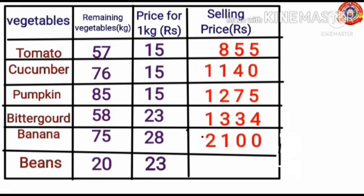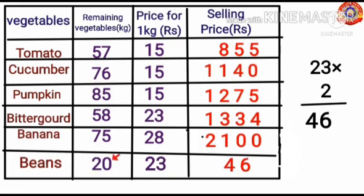Next, find the selling price of beans. To find out this, multiply 20 and 23. At first, multiply 23 and 2: 2 into 3 is 6, 2 into 2 is 4 — then put the 0 on its right side, giving 460. Selling price of beans equals Rs. 460.